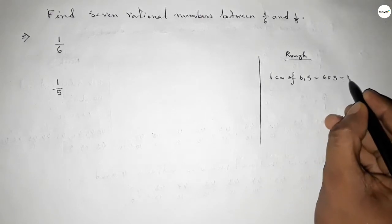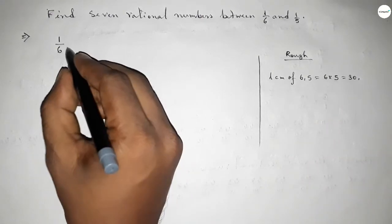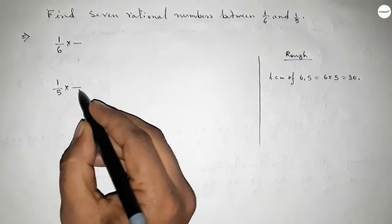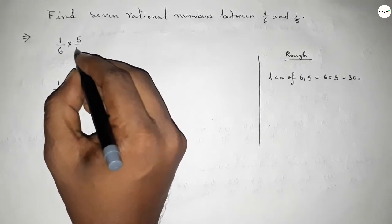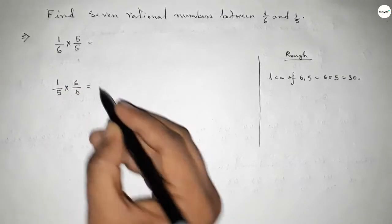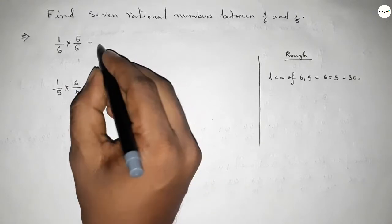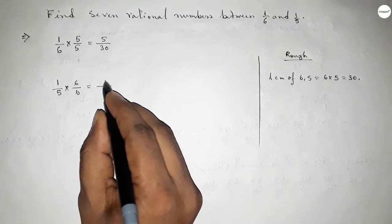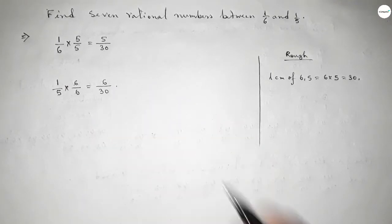Now, what should we multiply here, up and down, to get 30 as the denominator? If we multiply by 5 up and down here, and by 6 there, then we can get 30 as denominators. So this is 5 over 30 and this is 6 over 30.